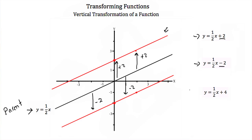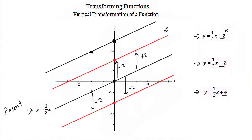An easy way to graph y is equal to one-half x plus 4 is to go to our parent function, pick some points, and then just move up 4. If we start at the origin and go up 4, we get a point right here. Pick any point on the parent function, move in the y-direction by 4, and draw the line. To perform a vertical transformation, all you do is add or subtract to the end of the function, or change the y-intercept.